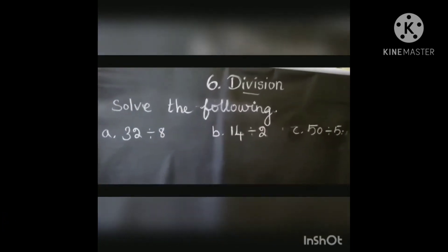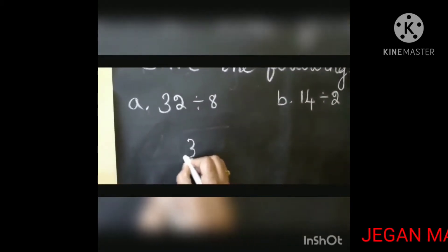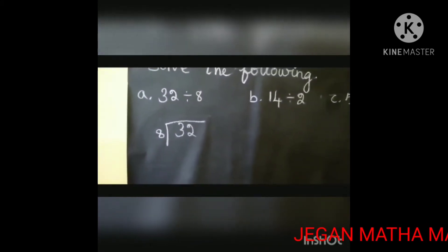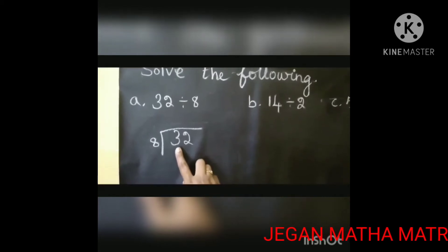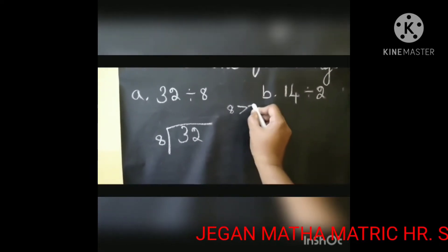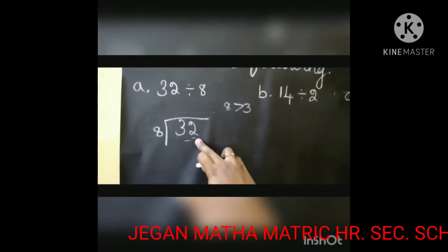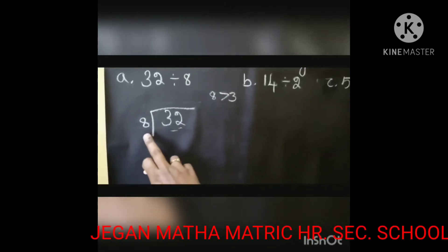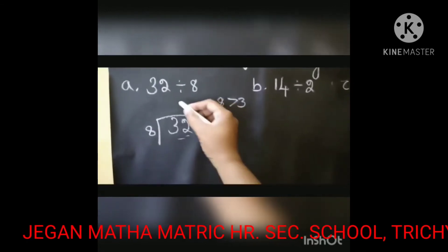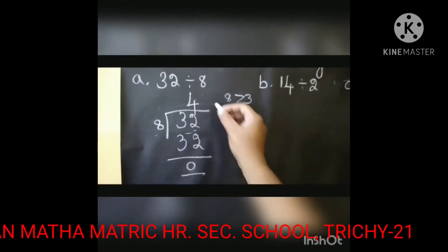Come let's see the next sum. Solve the following — you want to find the answer the same way. First: 32 divided by 8. You want to check the number from the nearest number to 32. Take the higher place value — here 3. Compare to 8: 3 is the lesser number, so consider 32. In the 8 table, you know 8 4's are 32. Write 8 4's are 32. 32 minus 32 is 0. So the answer is 4.